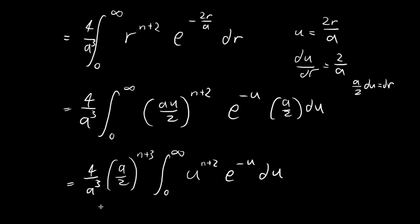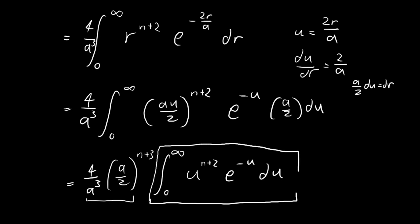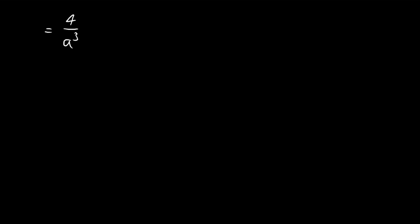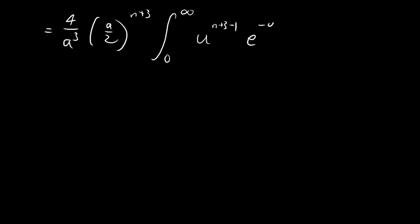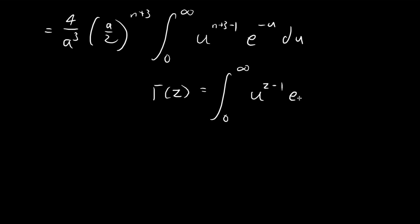Our expression equals some constants multiplied by this integral, so all we need to do is evaluate it. To do so, I'm going to invoke the gamma function. Copying out the constant (a/2) to the power of n+3, I'll rewrite u to the power of n+2 as u to the power of (n+3)−1. This is because the gamma function evaluated at z is defined as the integral from 0 to infinity of u to the power of z−1 times e to the power of negative u, du.